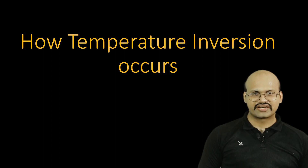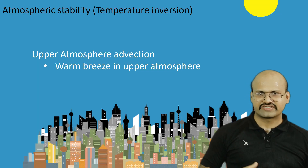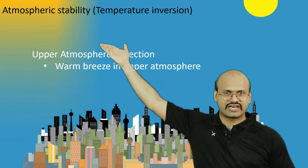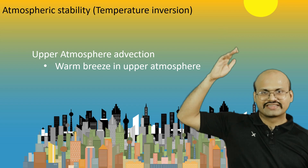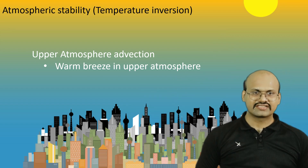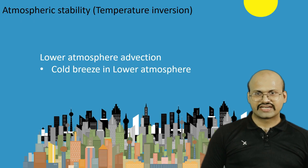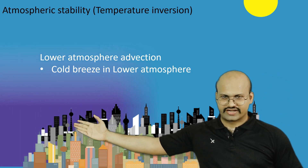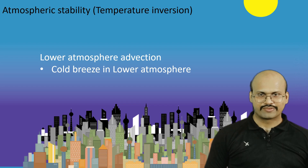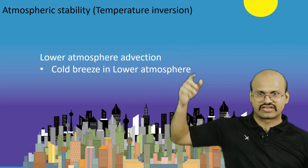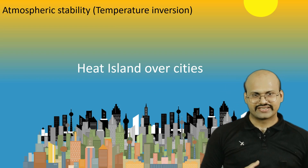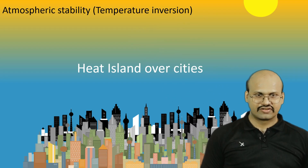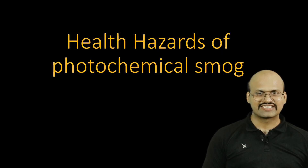What causes temperature inversion or atmospheric stability? The first is upper atmosphere advection — warm currents from elsewhere arrive and stay over the city, creating a warm bridge in the upper atmosphere so air will not rise. The second could be a cold current arriving in the lower atmosphere, making lower air colder than the air above, creating atmospheric stability. There is also the heat island effect over cities: in megacities, the large amount of heat produced creates a hot air mass confined only over the city.